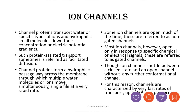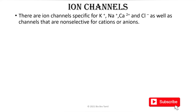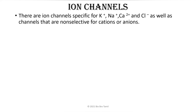Ion channels have different types for different ions: potassium (K+), sodium (Na+), chloride (Cl-), and calcium (Ca2+). Some ion channels are non-selective — basically, cation channels can be non-selective in nature.